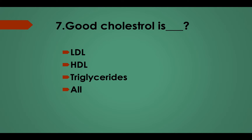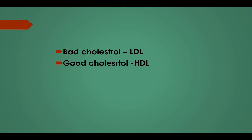Question No. 7: Good cholesterol is: Option A, LDL; Option B, HDL; Option C, Triglycerides; Option D, All. Correct answer: Option B, HDL. Bad cholesterol is LDL and good cholesterol is HDL.